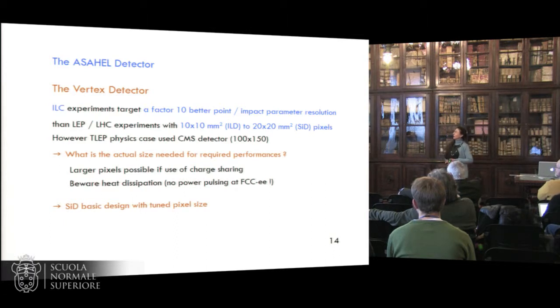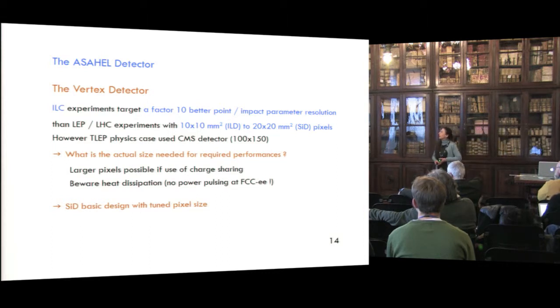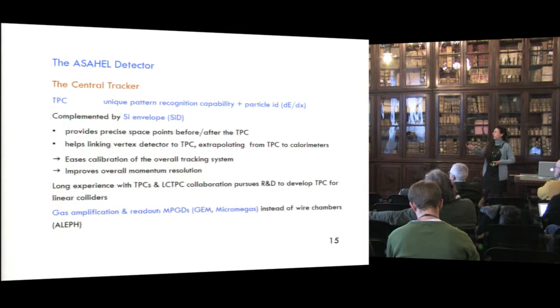However, the TLEP physics case, as I remind you again, used a CMS detector, but of the same dimension, or even larger dimension than those that were used at LHC. So, what is the actual size that it's really needed for record performances? One could use larger pixels if one makes use of charge-sharing, and one also to think when determining the number of channels of the dissipation, since we cannot use power pulsing at FCC. So, we can start from the SID basic design with tuned pixel size, perhaps.